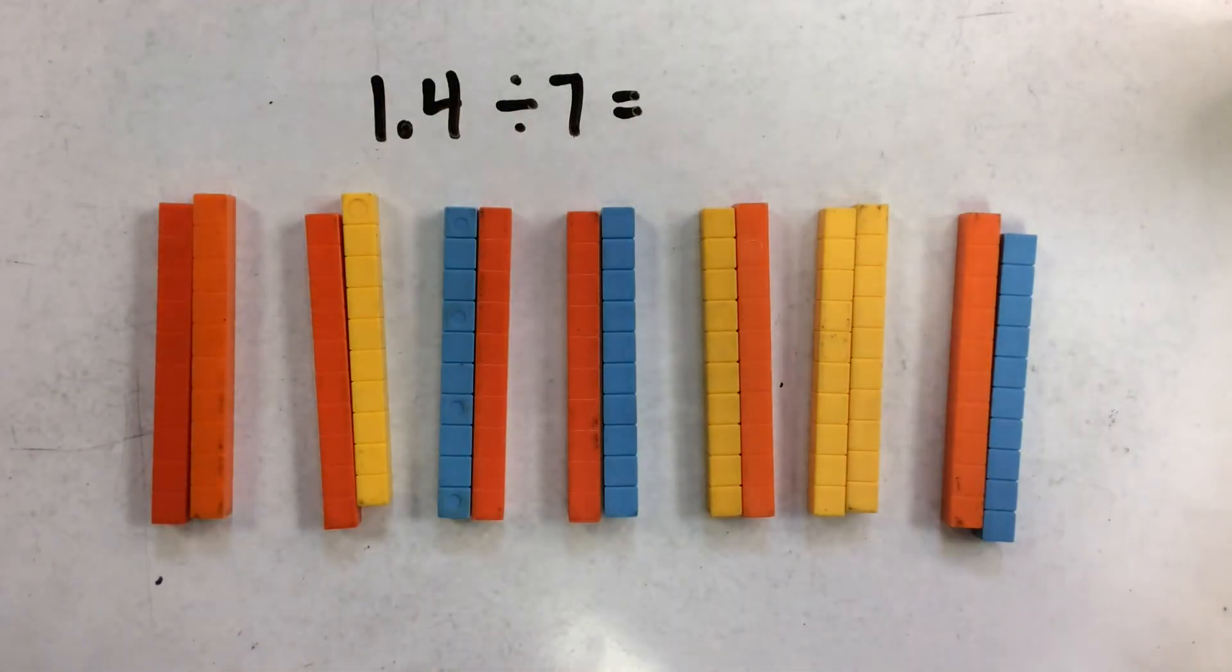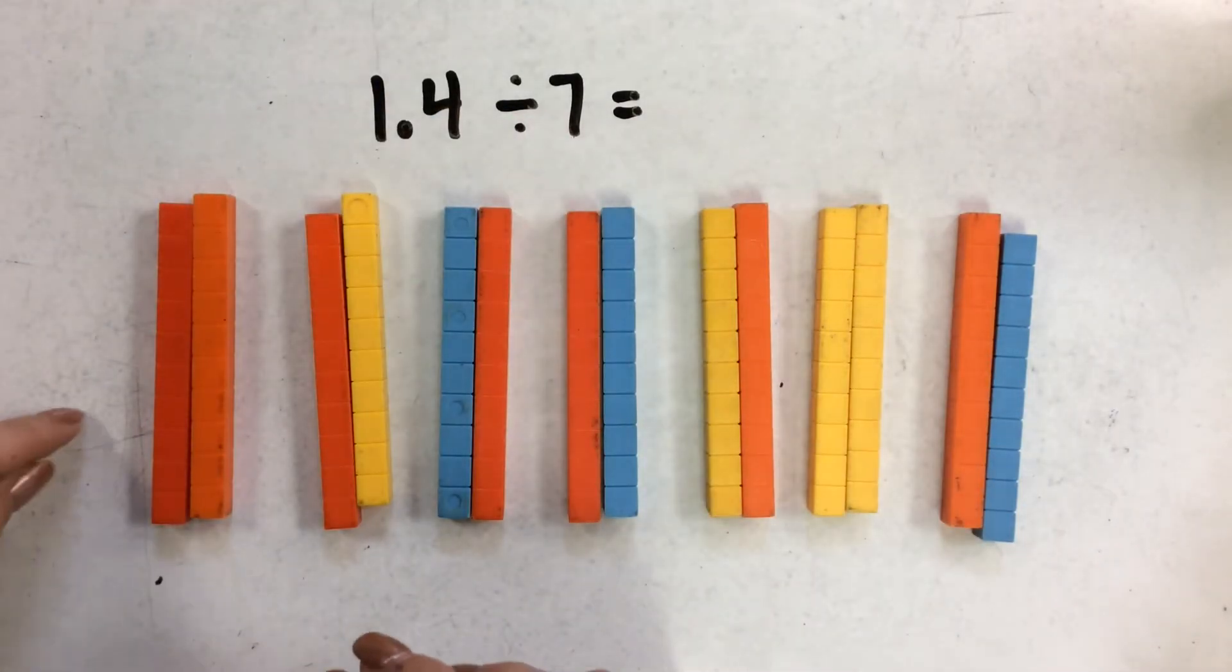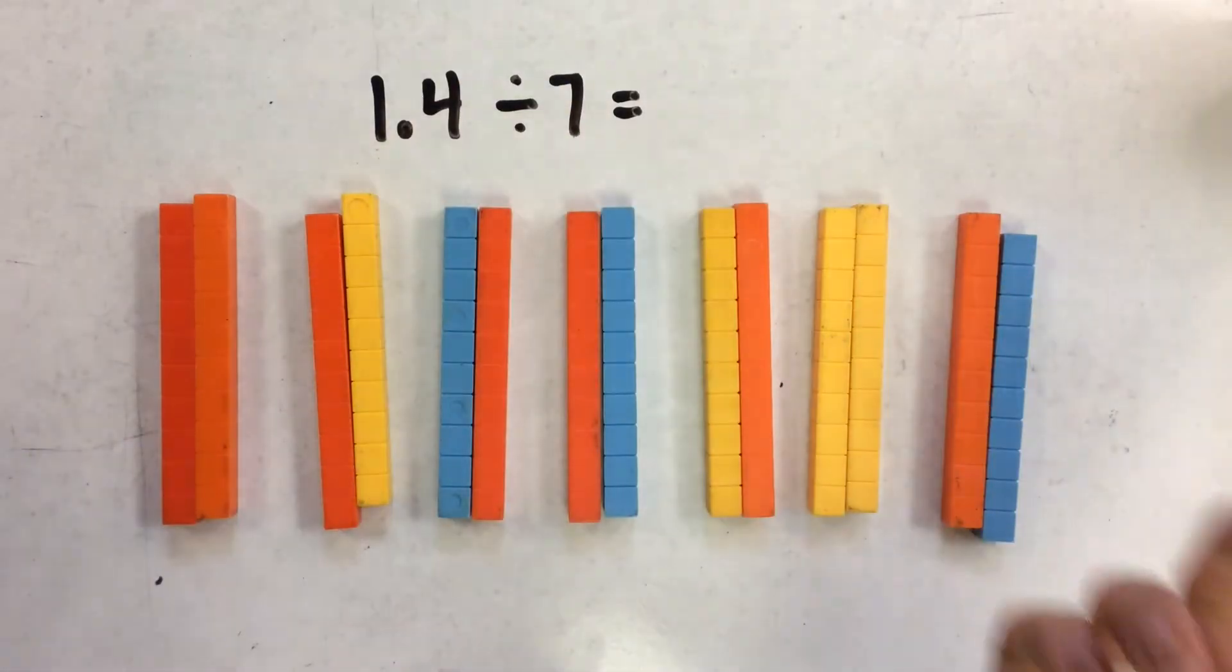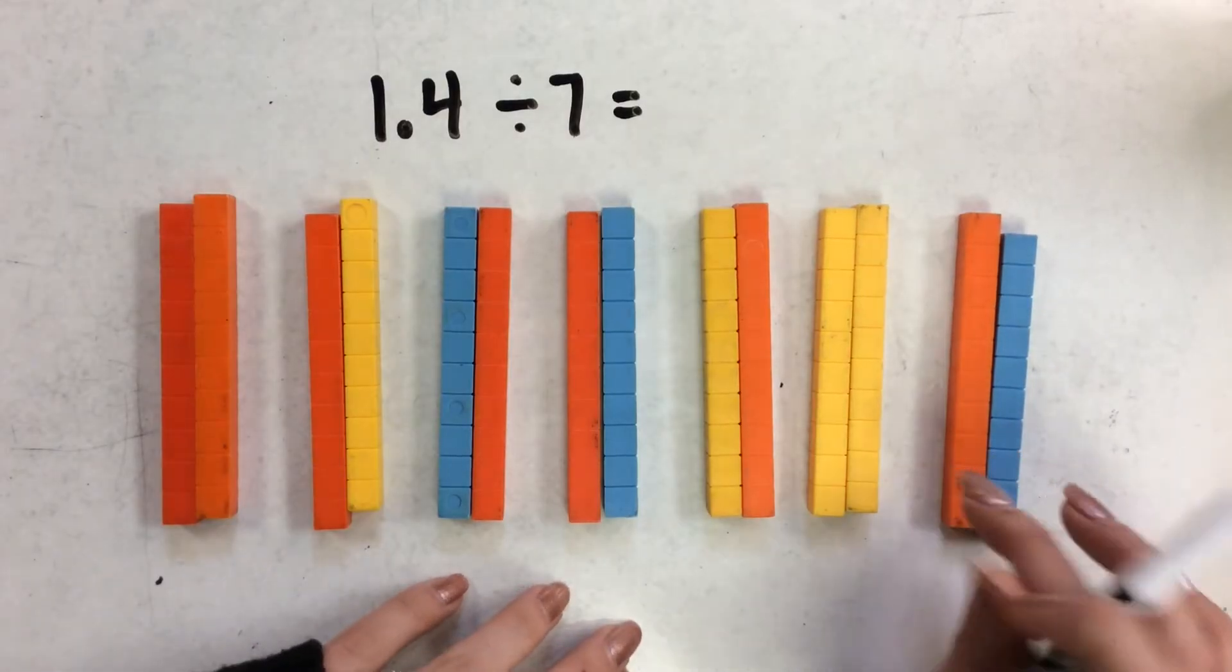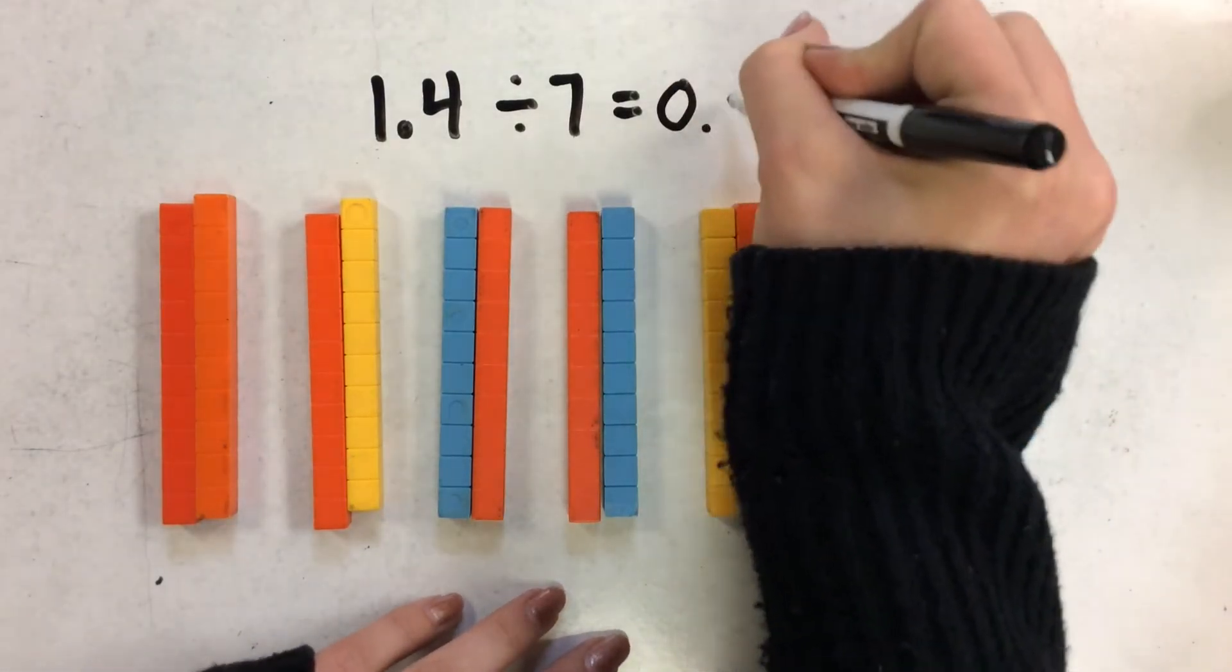Okay, so there are my 7 groups. And I have a total of 1.4 or 14 tenths split into 7 groups, giving me 2 tenths in each group.